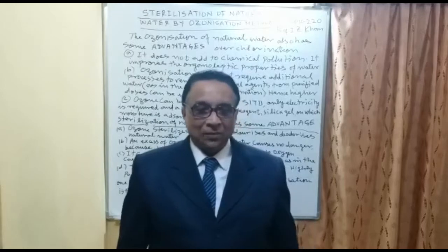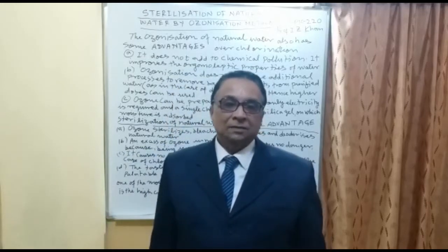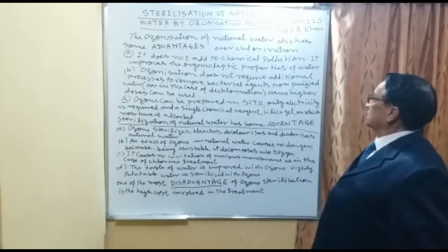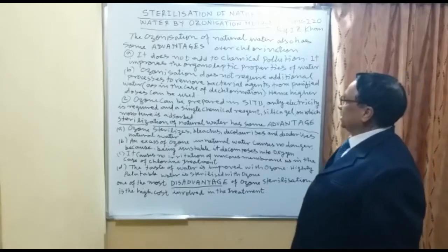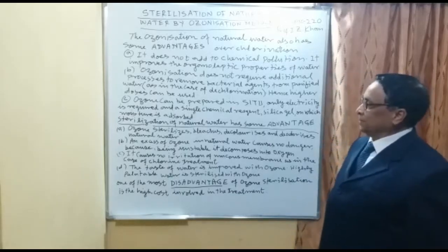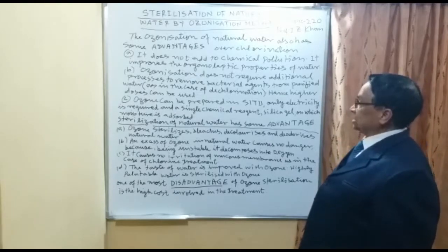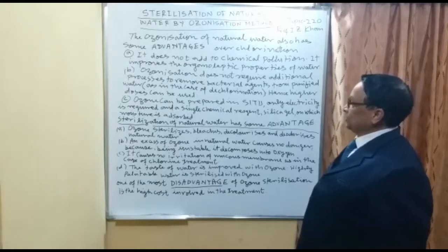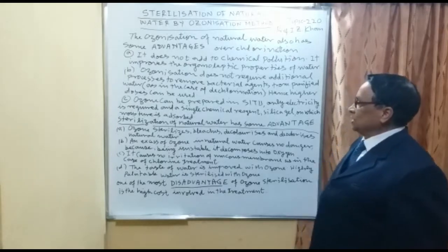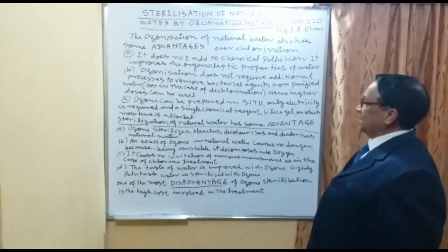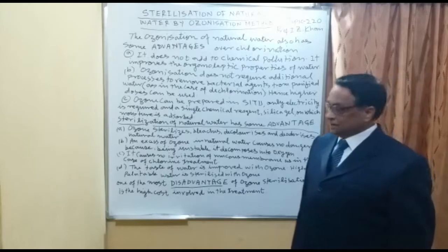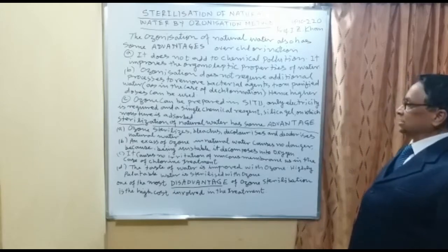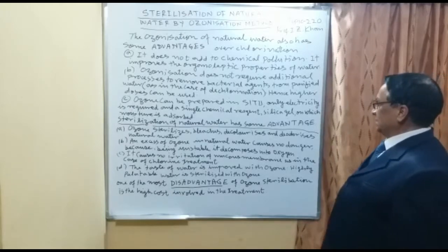There are three advantages of ozonization over chlorination. A: It does not add to chemical pollution in water and improves the organoleptic properties of water. B: Ozonization does not require additional processes to remove bacterial agents from purified water as in the case of chlorination — that is, dechlorization — hence higher doses can be used.